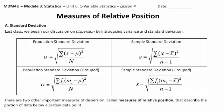This is the final lesson in our unit on one variable statistics, and what we're looking at today are measures of relative position. Last lesson we looked at dispersion and measures of spread, where we introduced variance and standard deviation. But there are other measures of dispersion called the measures of relative position.